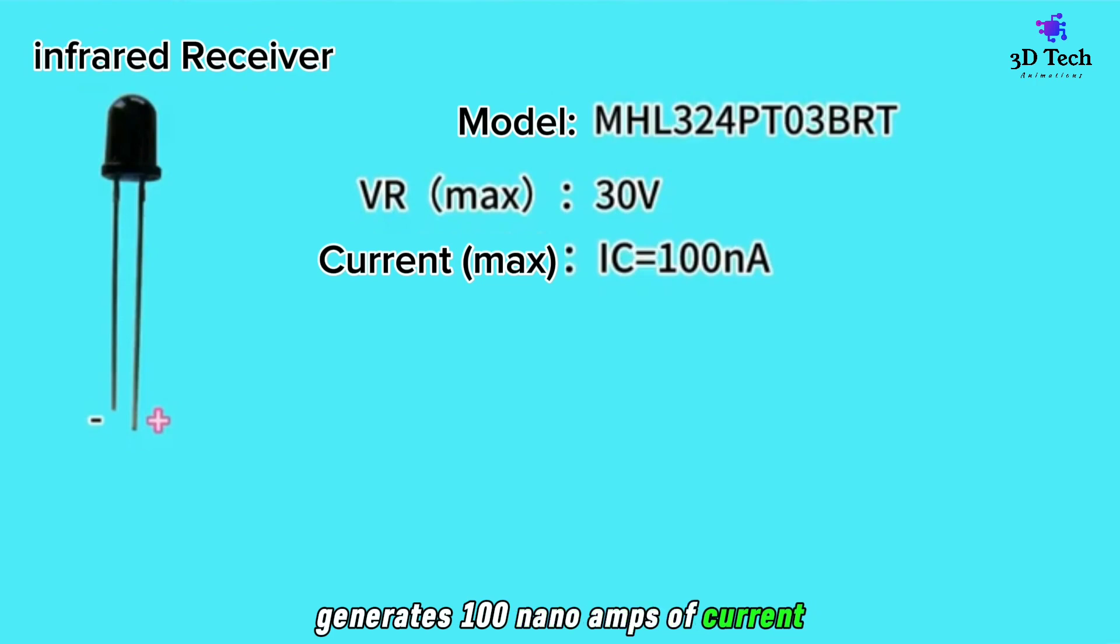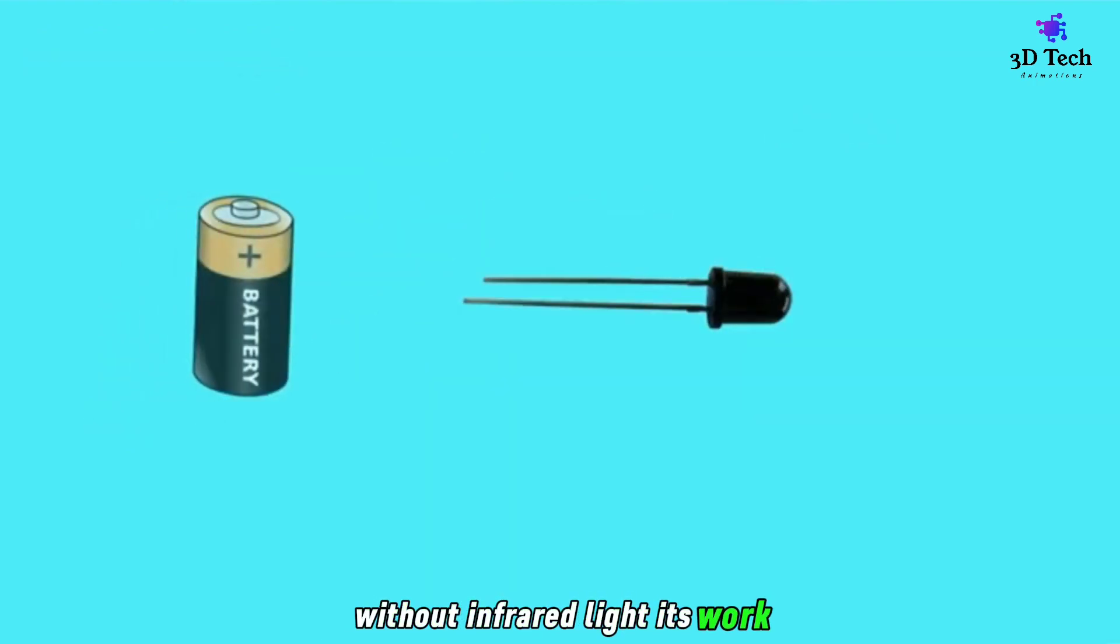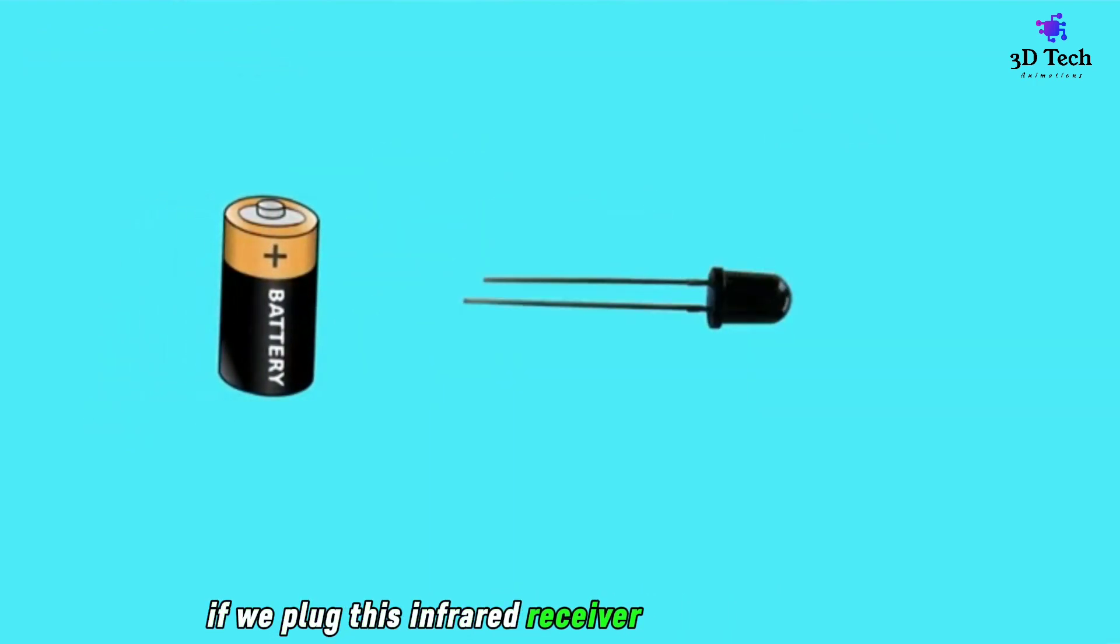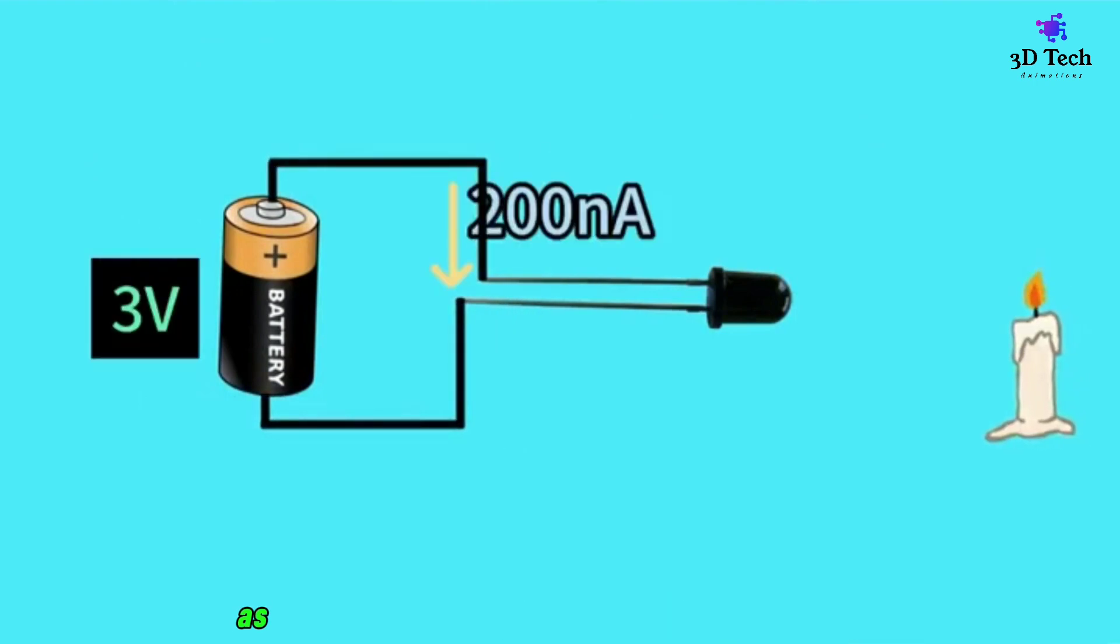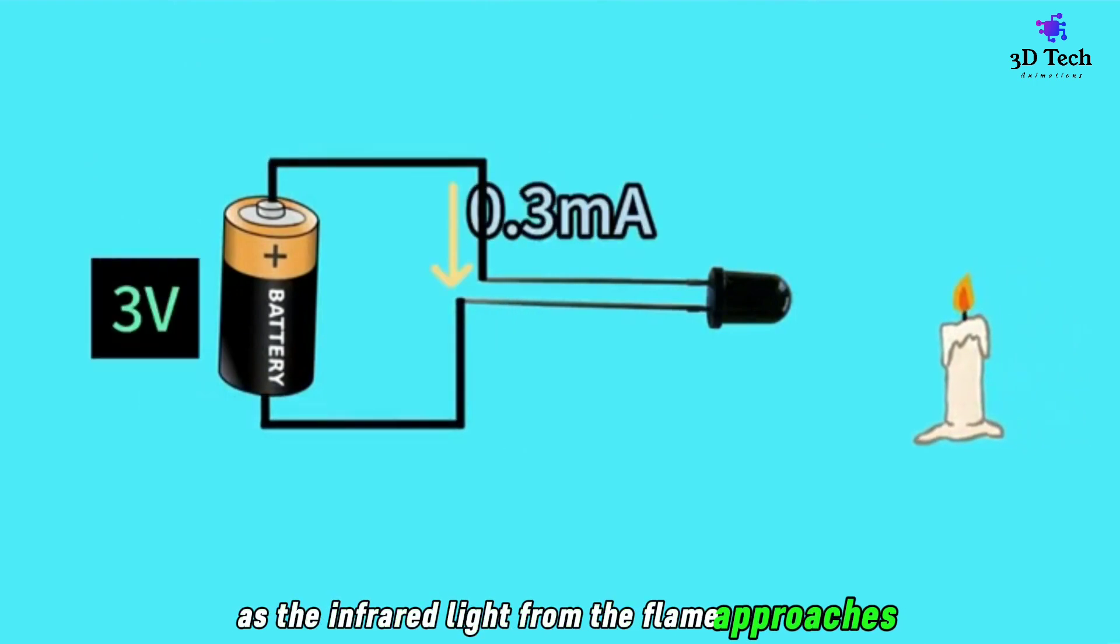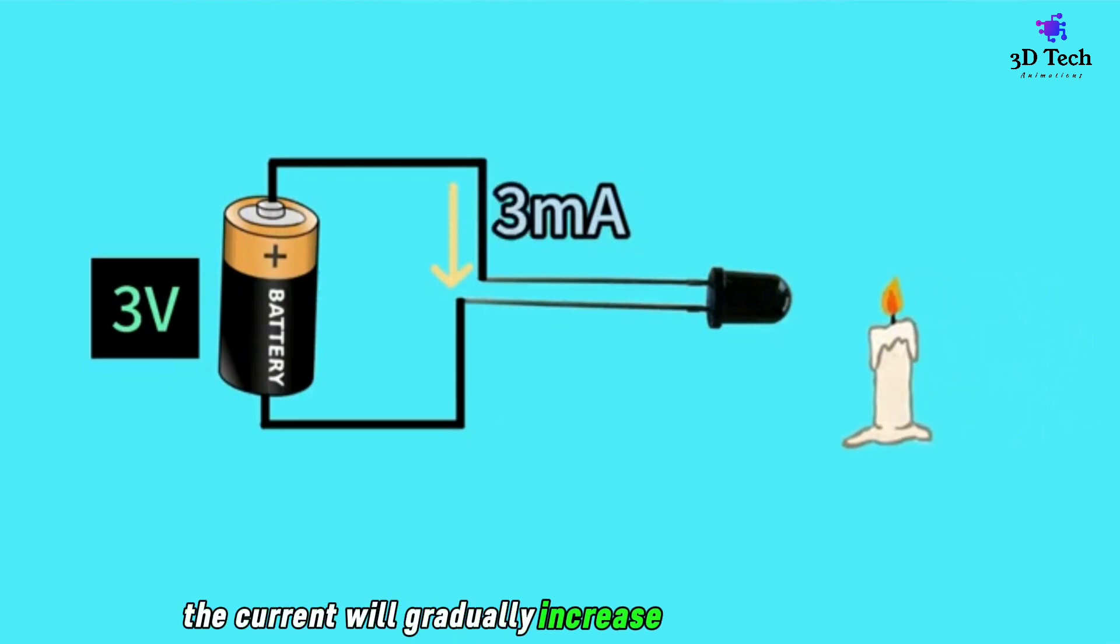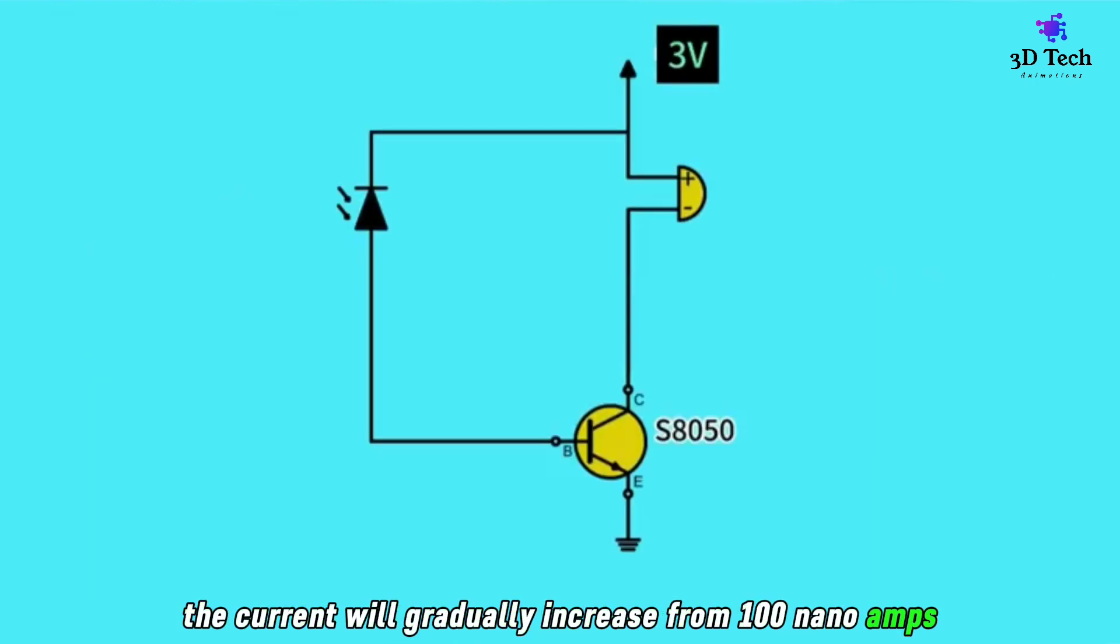It works if we plug this infrared receiver into a power supply of less than 30 volts. As the infrared light from the flame approaches, the current will gradually increase from 100 nanoamps.